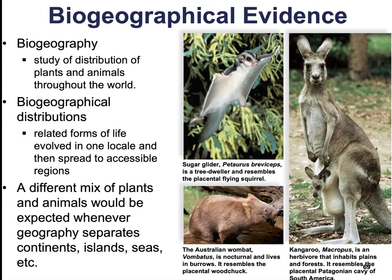Marsupials — mammals in which females have an external body pouch where the young complete their development — evolved from egg-laying mammal ancestors. Today they are endemic to South America and Australia. When Australia separated and drifted away from other land masses, the marsupials diversified into many different forms, such as the sugar glider, a tree-dwelling marsupial similar to a flying squirrel, the Australian wombat, and the kangaroo.